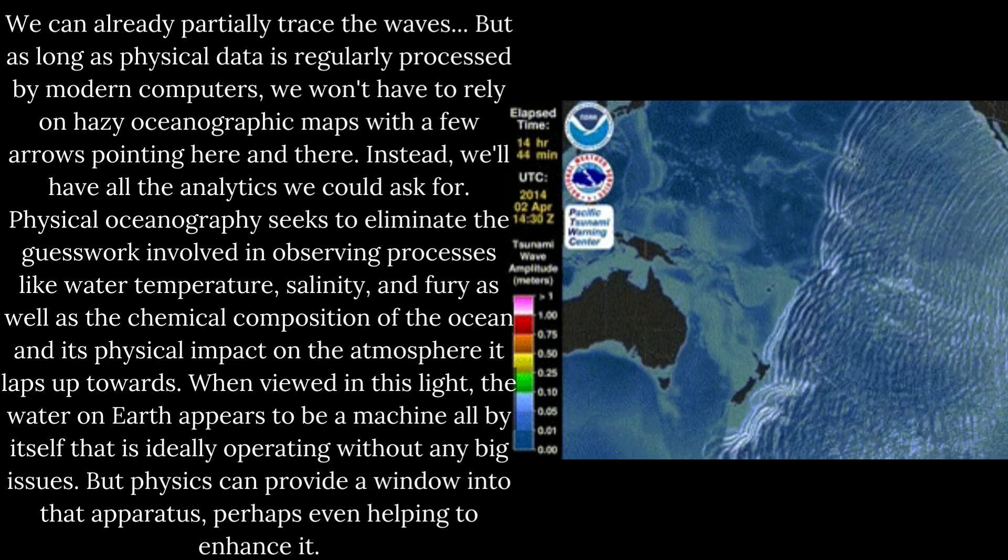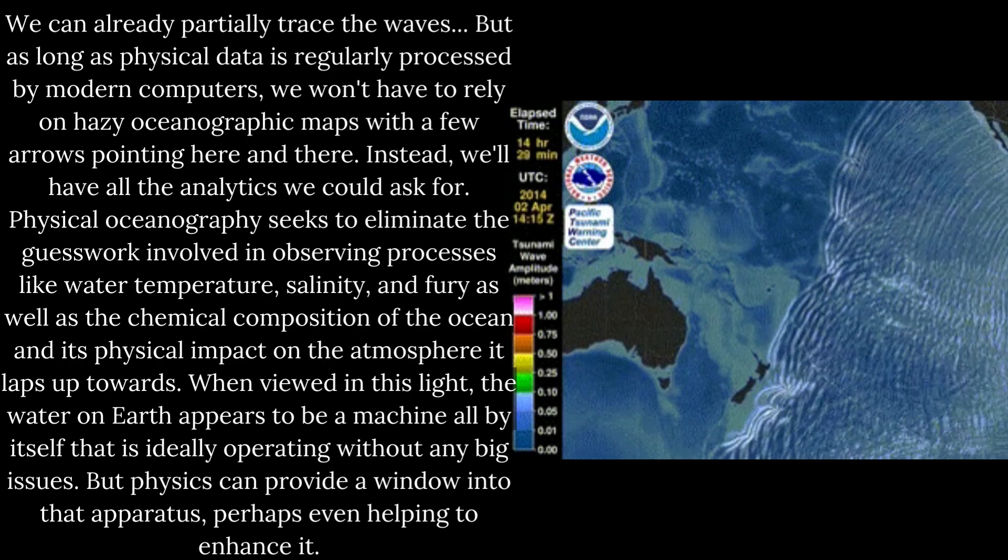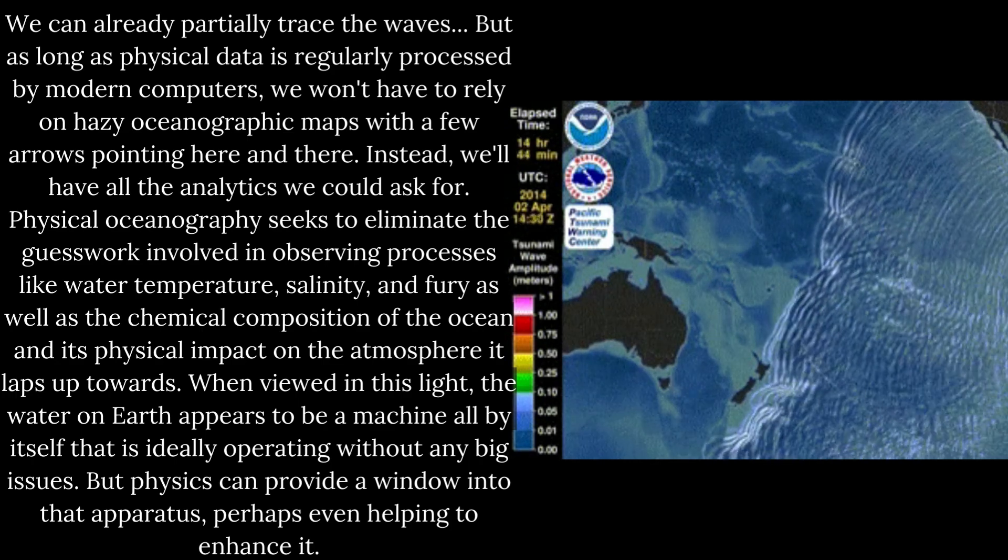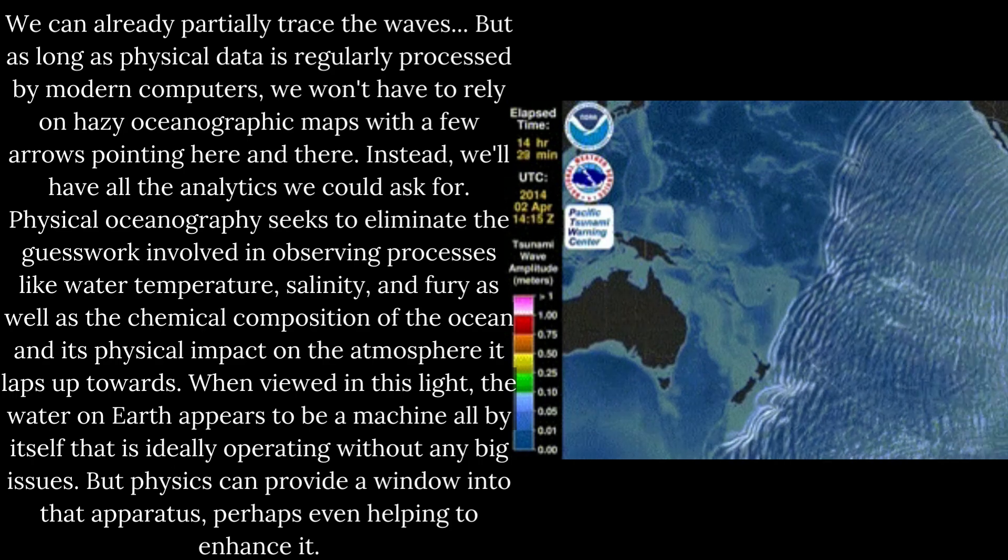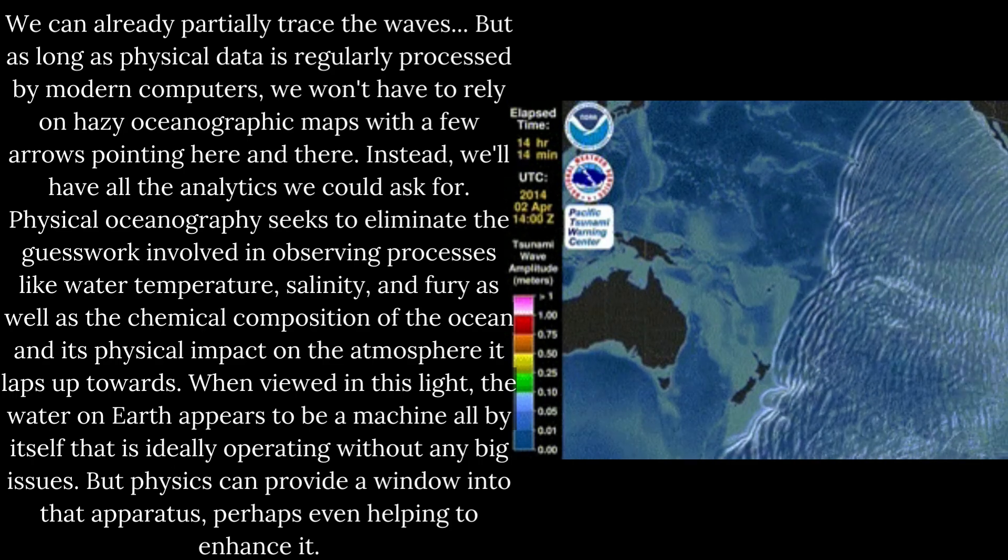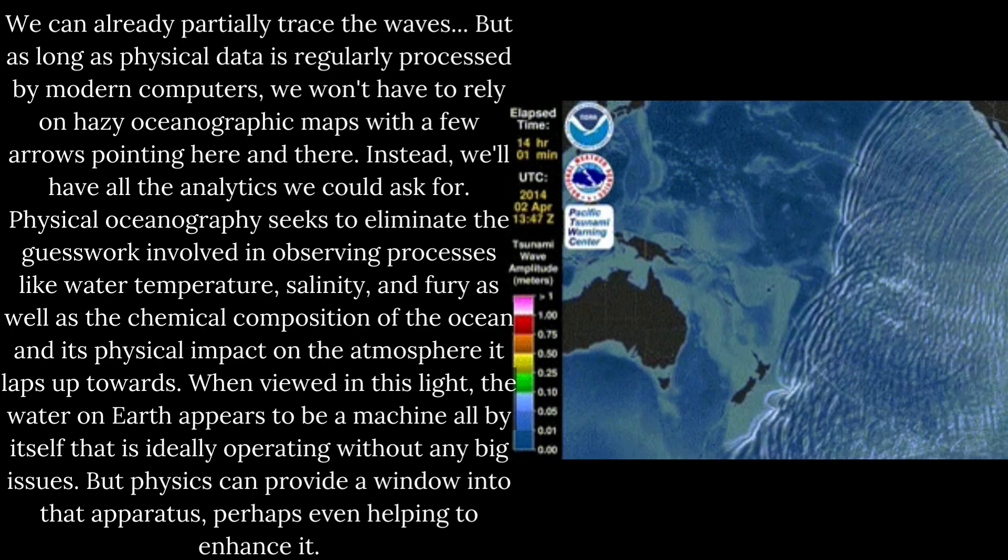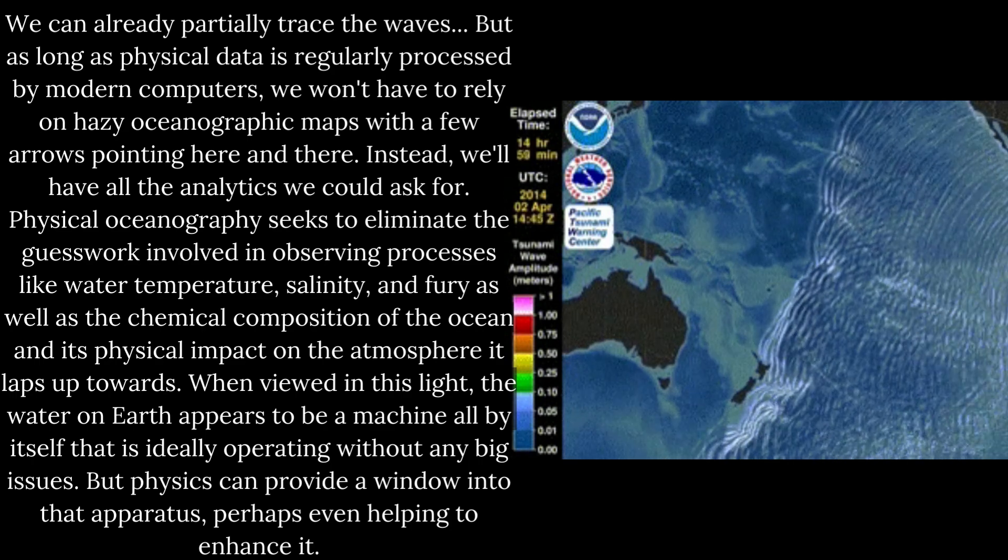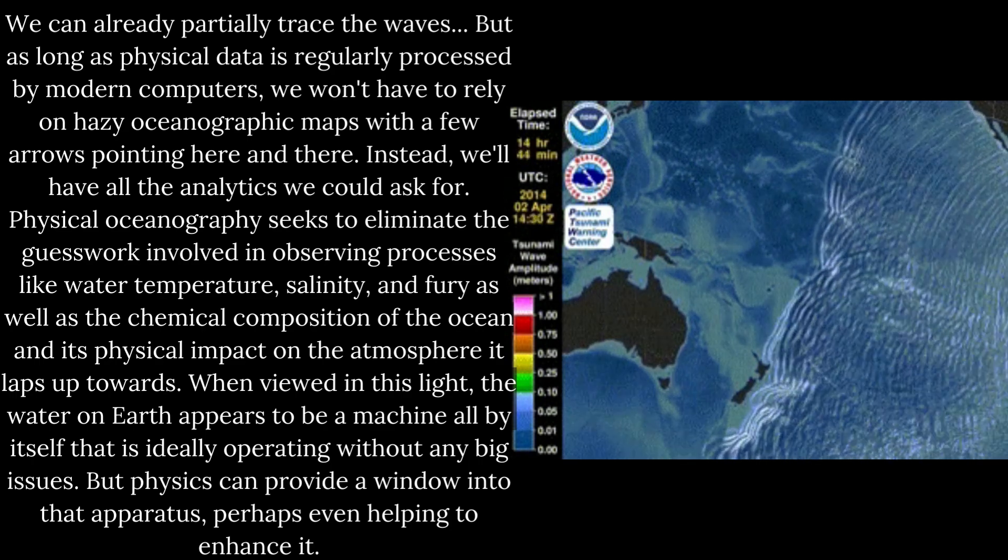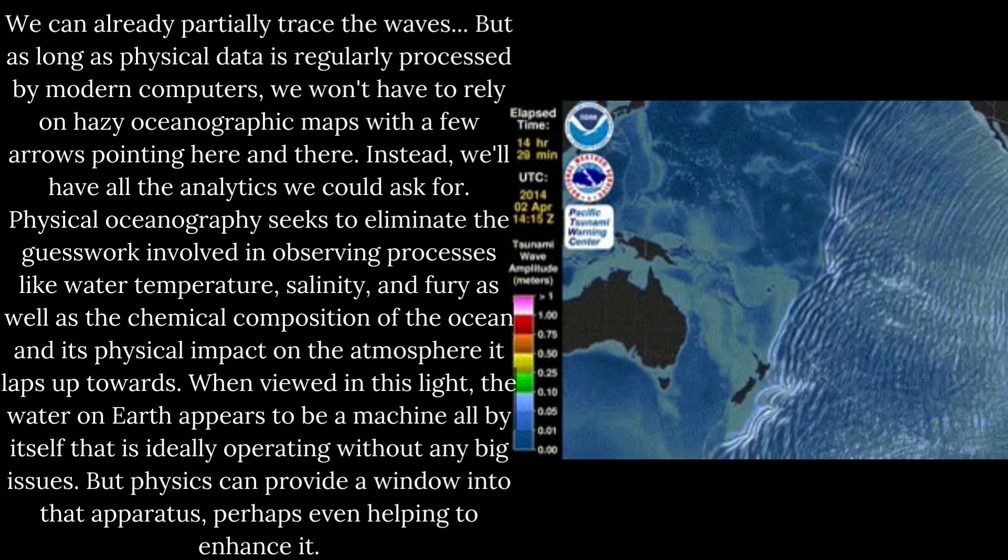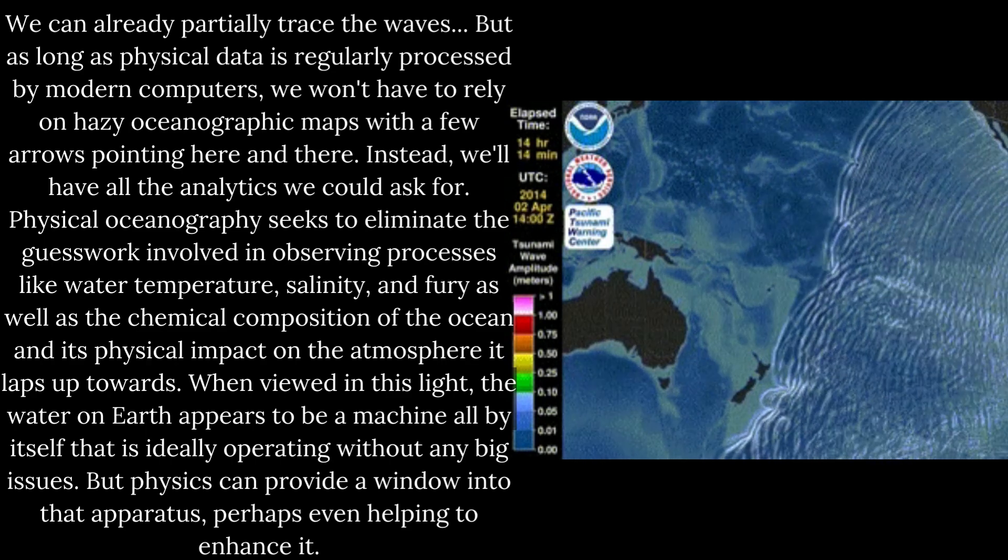Physical oceanography seeks to eliminate the guesswork involved in observing processes like water temperature, salinity, and fury as well as the chemical composition of the ocean and its physical impact on the atmosphere it laps up towards. When viewed in this light, the water on Earth appears to be a machine all by itself that is ideally operating without any big issues. But physics can provide a window into that apparatus, perhaps even helping to enhance it.